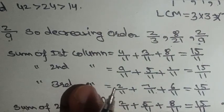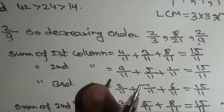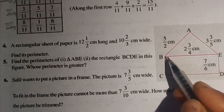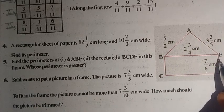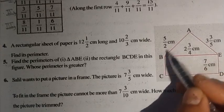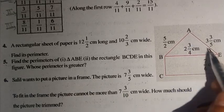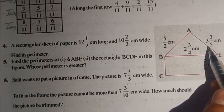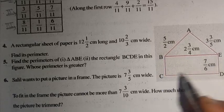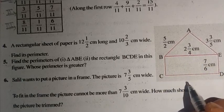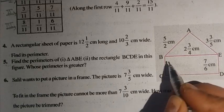Yes, this is a magic square. Now question number 5: Find the perimeter of triangle ABE and rectangle BCDE in this figure, and determine whose perimeter is greater. This is triangle ABE and rectangle BCDE. The side AB is 5/2 cm, BE length is 2 and 3/4, and AE length is 3 and 3/5.